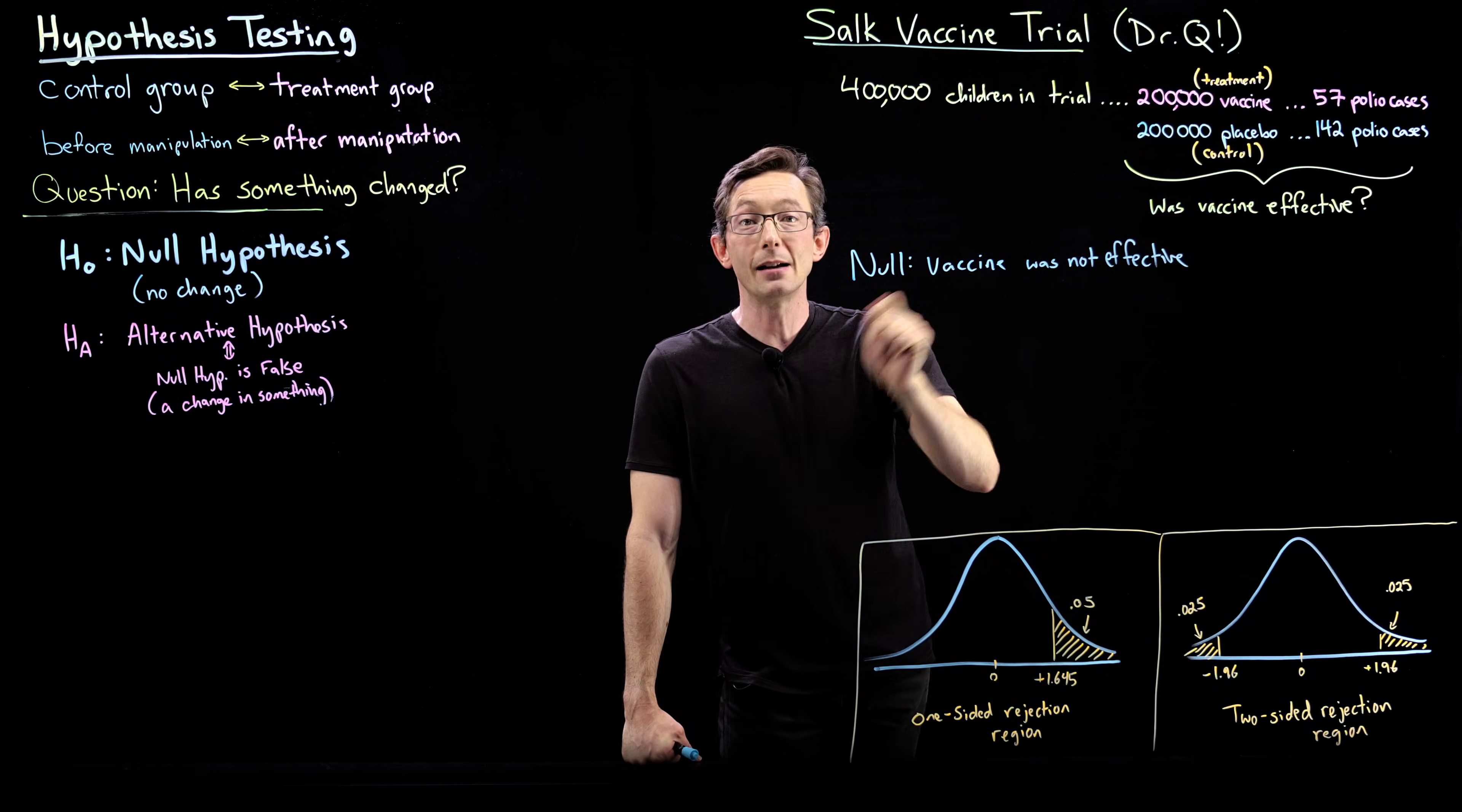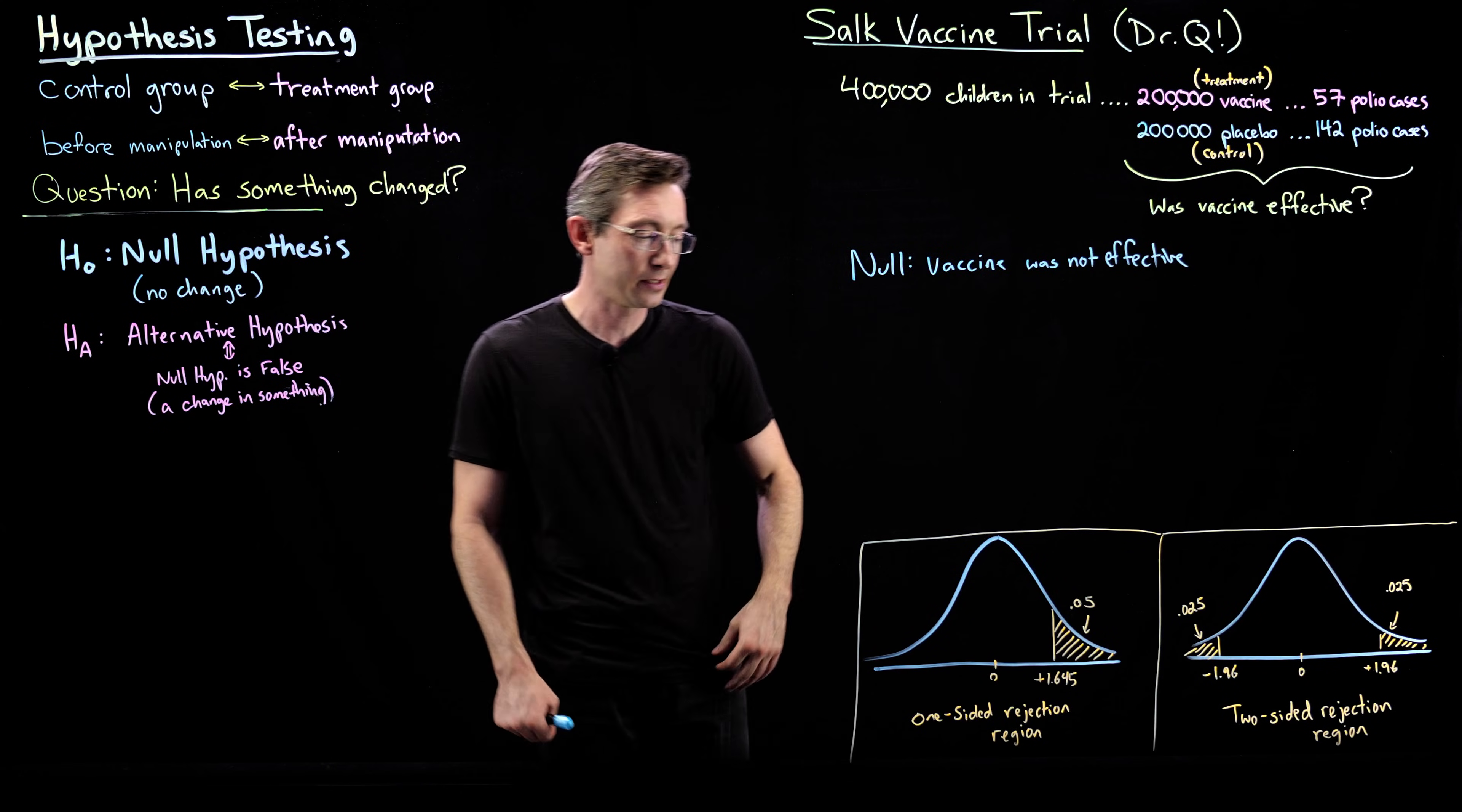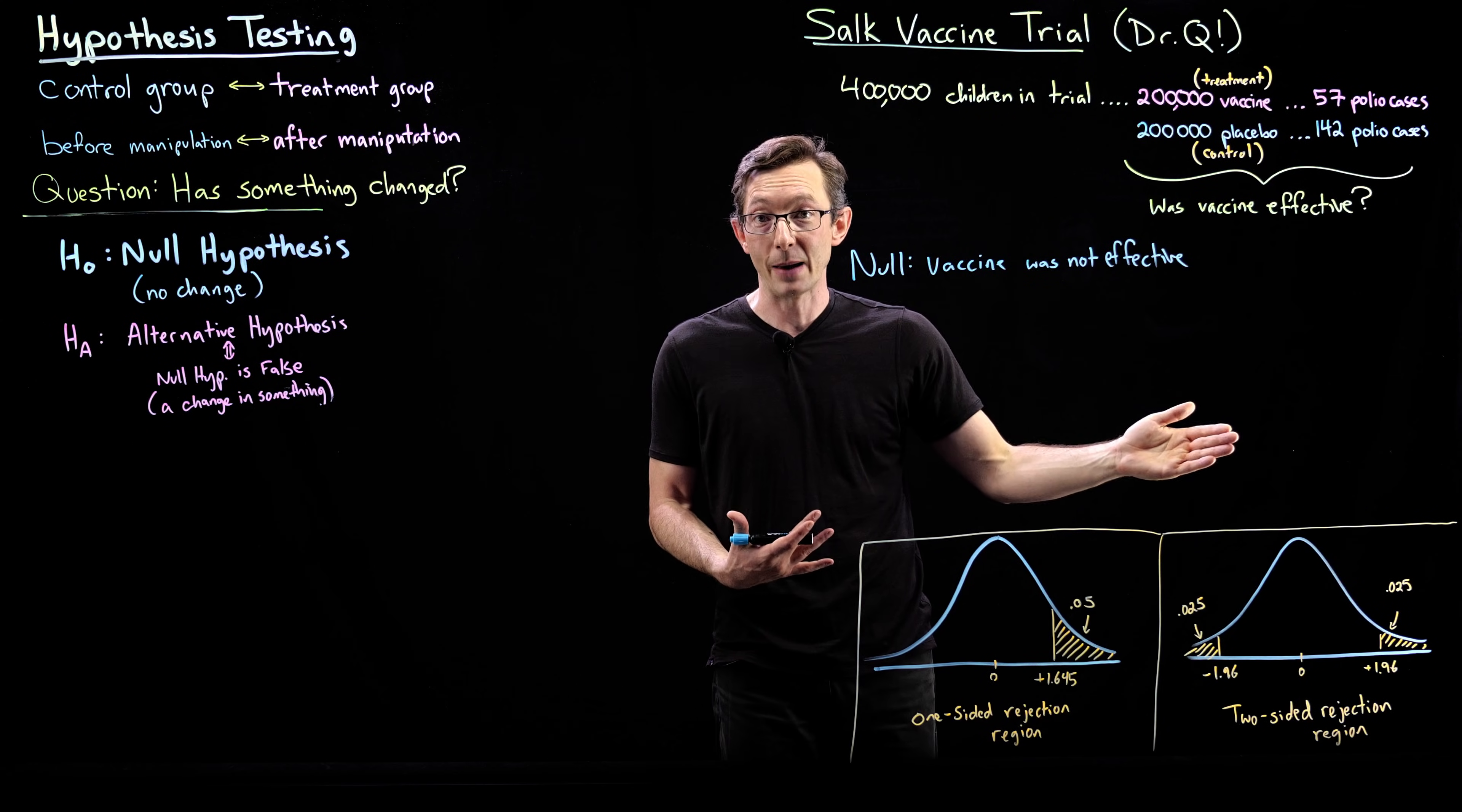We're going to create some test statistic Z that we want to be kind of a Gaussian unit normal variable. And probably I'm going to use a one-sided rejection test because we have a feeling that the vaccine should only help. It probably won't hurt. It probably won't cause more kids to get polio. That doesn't make sense from how vaccines, how that vaccine works. And so we would mostly be testing, did the rate go down? We're not testing if the rate went up.